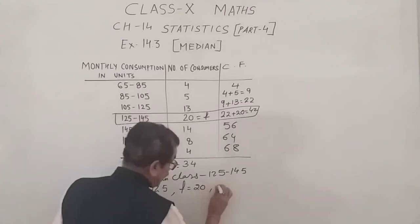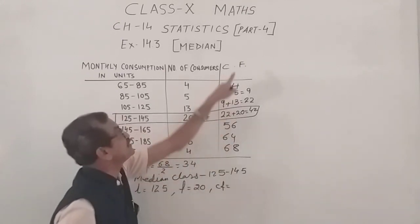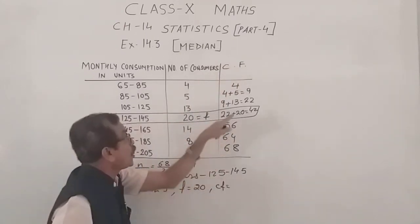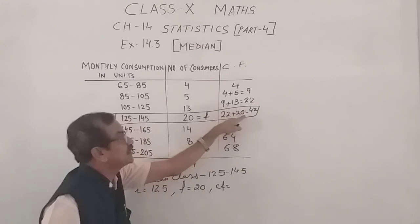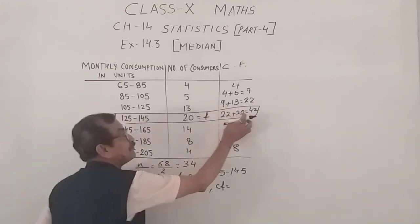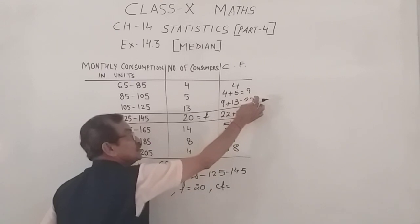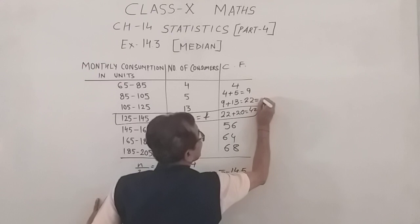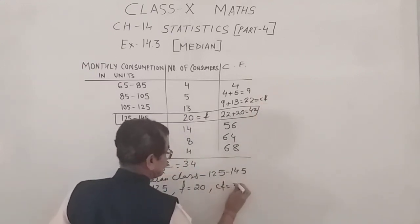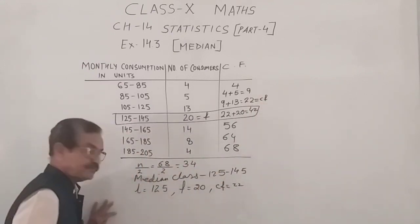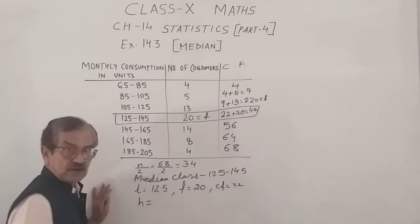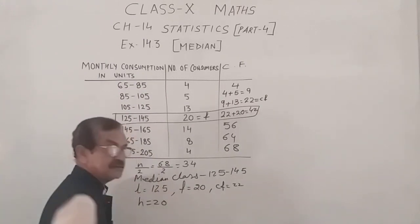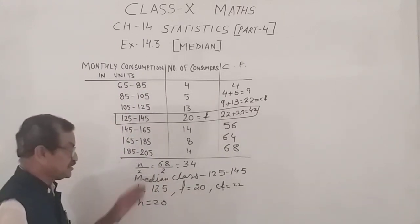I can write here also for you to remember. Then, we have to find out the CF. Now, here the CF is not the cumulative frequency. Here, the CF is the cumulative frequency of the preceding class of the median class. That is, the CF of the class before the median class. That means, 22. So, I write here for easy reference, 22. Then, we have the height of the class. Class size. 85 minus 65. That is 20.